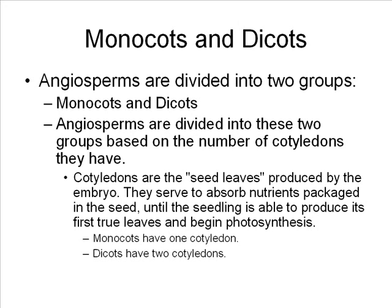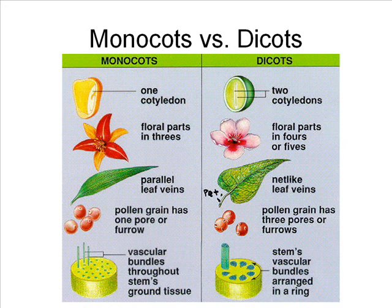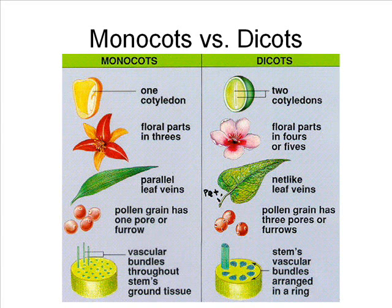Cotyledons are seed leaves produced by the embryo. These structures serve to absorb nutrients packaged in the seed and help the seed to survive until it is able to produce its first true leaves and begin photosynthesis. Monocots have one cotyledon and dicots have two.